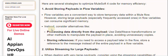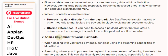Instead, consider alternatives like processing data directly from the payload. Use DataWeave transformations or other methods to manipulate the payload in place, avoiding unnecessary copies. If you need to access a payload later in the flow, store a reference to the message instead of the entire payload in a flow variable.